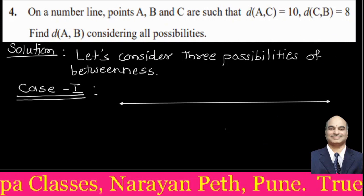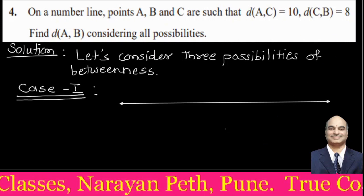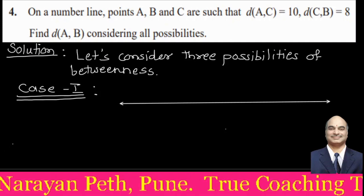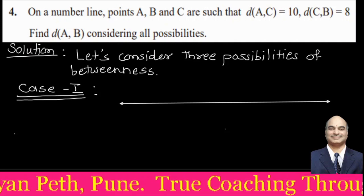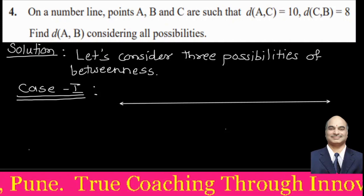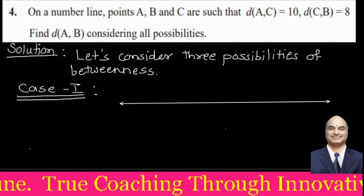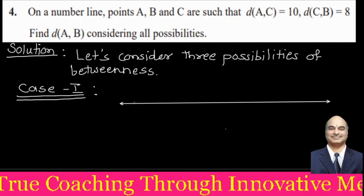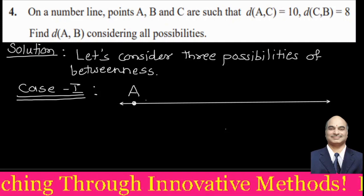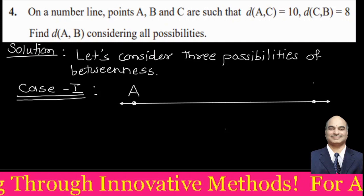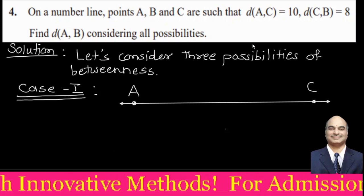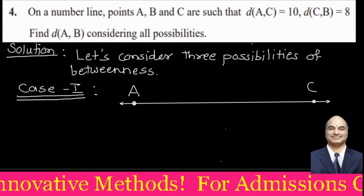Question 4: on a number line, points A, B, C are given such that distance AC is 10 and distance CB is 8. We need to find distance AB considering all possibilities. We draw a number line with points A and C where AC equals 10.